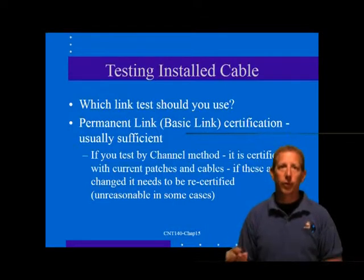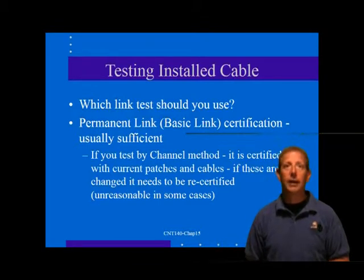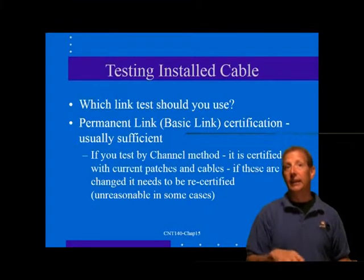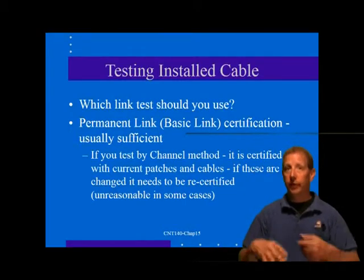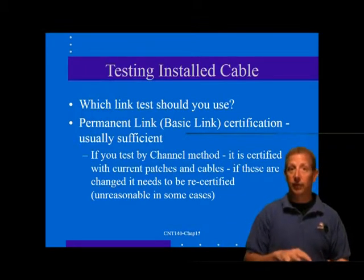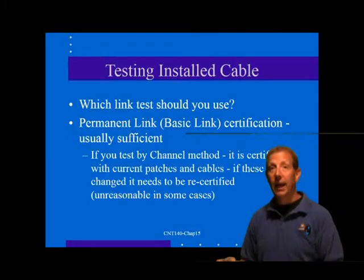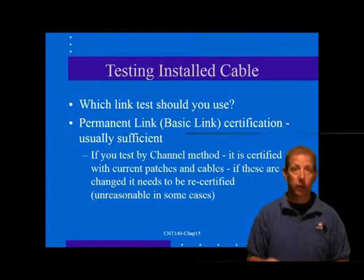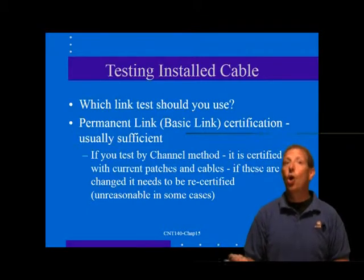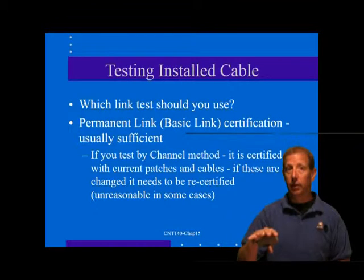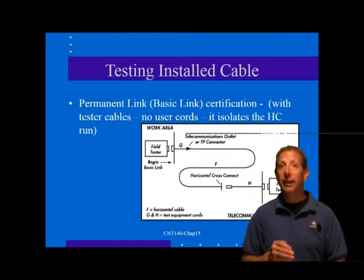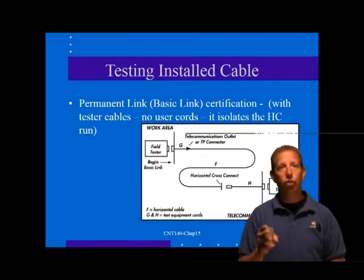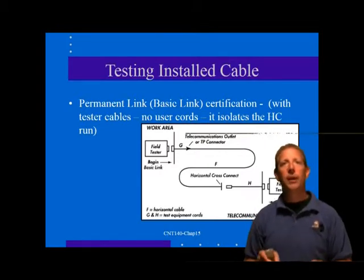The channel includes the actual equipment cords, user cords, patch cords, and cross-connect wire that connect to the network or telephone equipment at each end. Once you certify a channel with a particular set of equipment cables, those cables are frozen in place as far as the standard channel testing method is concerned. If you change cables you would need to recertify the channel. The permanent link was designed to allow a cable installation to be certified once the horizontal cables were installed by the installation contractor — it was originally called the contractor's link.